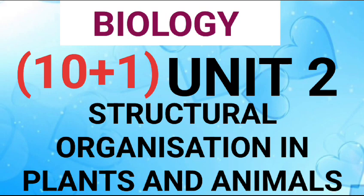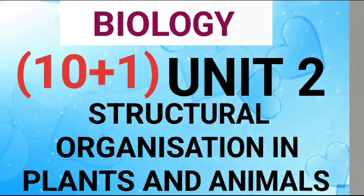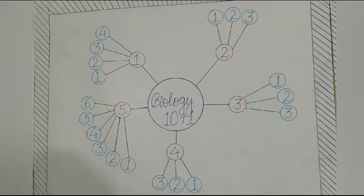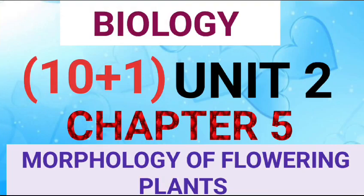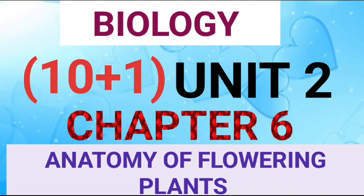Unit 2 Structure Organization in Plants and Animals. There were total 3 chapters, which were 2 chapters - chapter 5 Morphology of Flowering Plants and chapter 6 Anatomy of Flowering Plants, which we have already done.